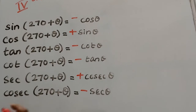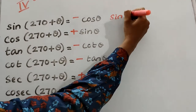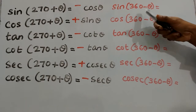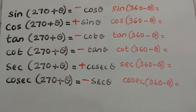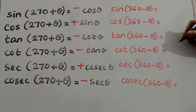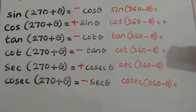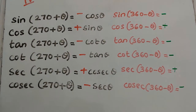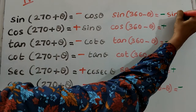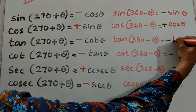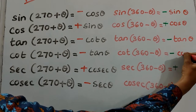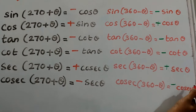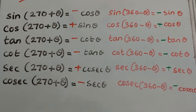One more angle comes in the fourth quadrant: 360° − θ. We need to find the trigonometric ratios based on 360° − θ. In the fourth quadrant, only cos and sec are positive. 360 is an even multiple of 90, so don't change the trigonometric ratio. The answers are: sine itself, cos itself, tan itself, cot itself, sec itself, and cosec itself. The fourth quadrant — only cos and sec are positive, so the rest are negative.